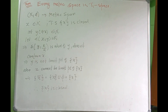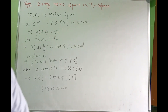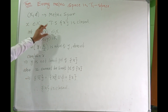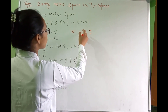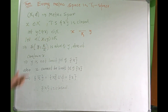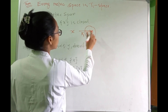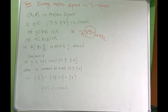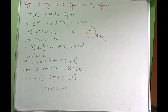For a metric space, we show that singleton sets are closed to establish T1. Take an arbitrary point X and any Y different from X. Let K be the distance between them. If we make an open sphere centered at Y with radius K/2, then since the full distance is K and the radius is K/2, the point X cannot belong to this sphere. So this open sphere is a neighborhood of Y that does not contain X.